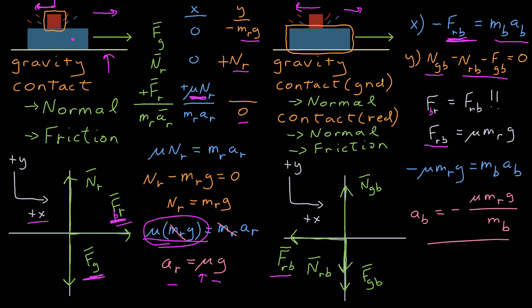The acceleration is negative — the coefficient of friction times the ratio of the masses, mass of red over the mass of blue, times the acceleration due to gravity. A quick check: mu is dimensionless, the two masses are in a ratio so their units cancel, and the dimension of an acceleration equals the dimension of g. That checks out.